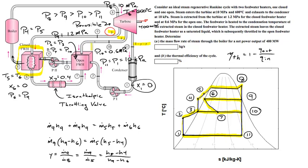You can find the value Z by doing an energy balance around the open feedwater heater. Enthalpy comes in via streams 10, 7, and 2, and leaves only through stream 3. You can relate M_dot_2 to M_dot_8 using (1 minus Y minus Z), relate M_dot_10 to M_dot_8 using Z, and relate M_dot_7 to M_dot_9 using Y. When you work this energy balance, M_dot_8 drops out of the equation, so you'll have enthalpies at streams 7, 2, 10, and 3 all related to Y and Z. Since you already know Y, you can solve for Z.